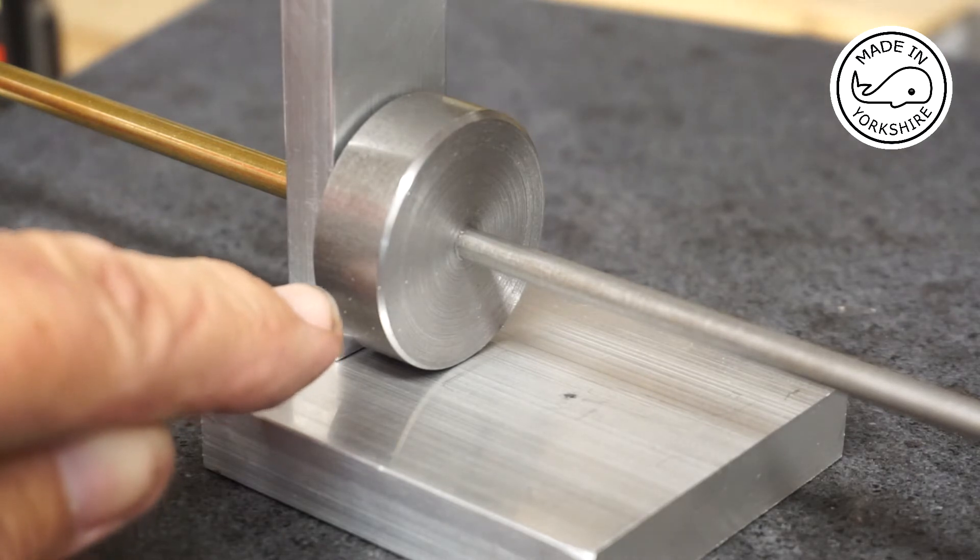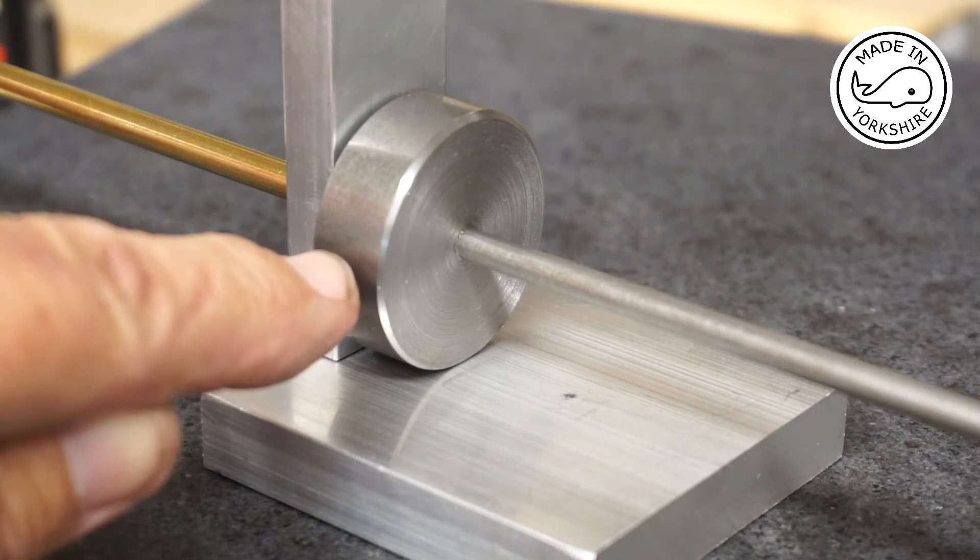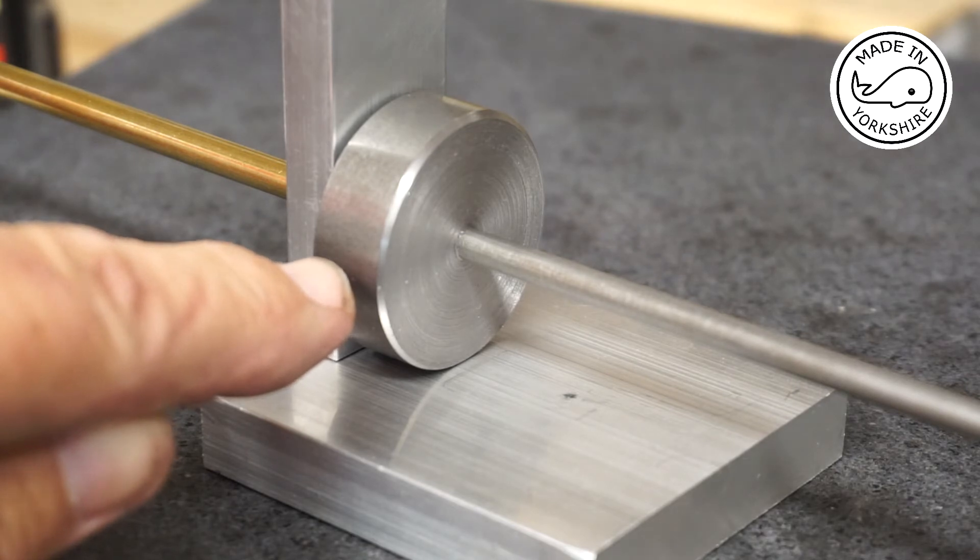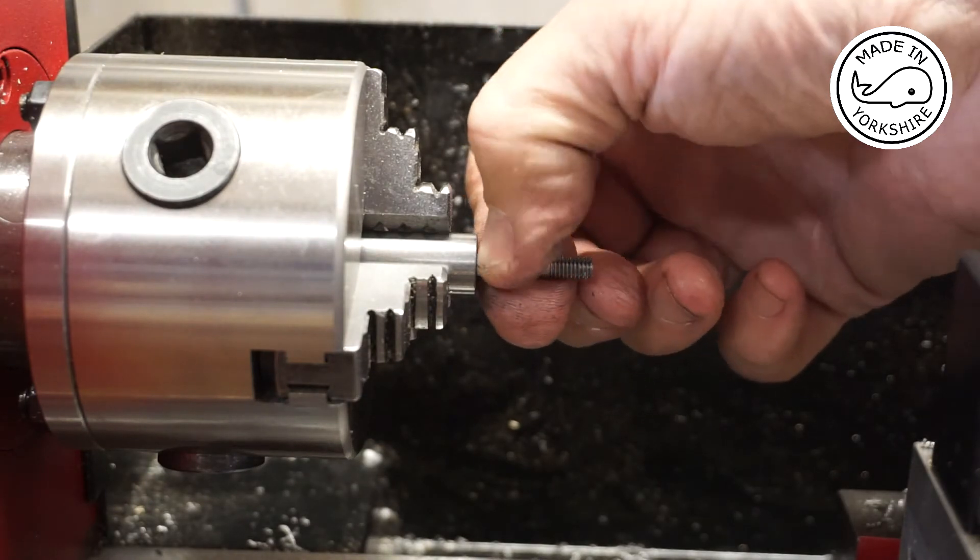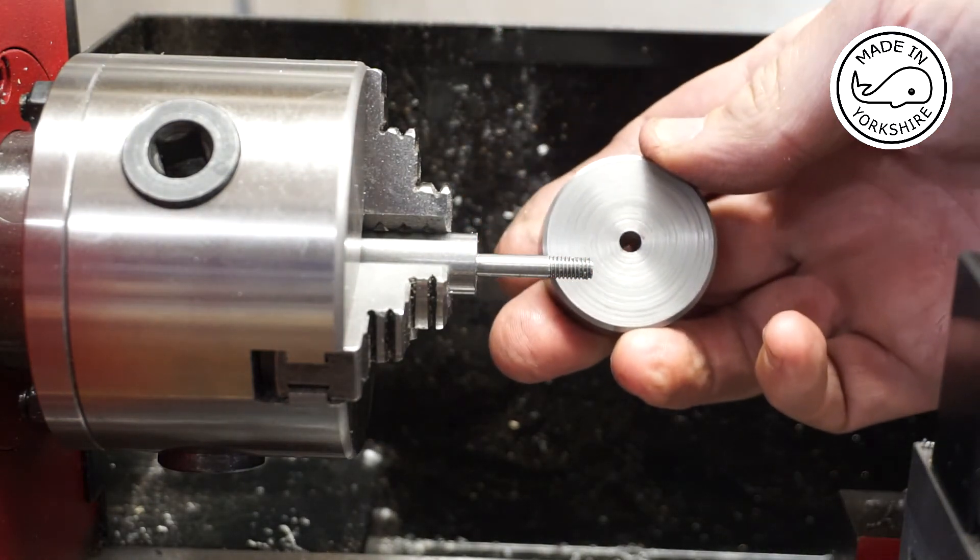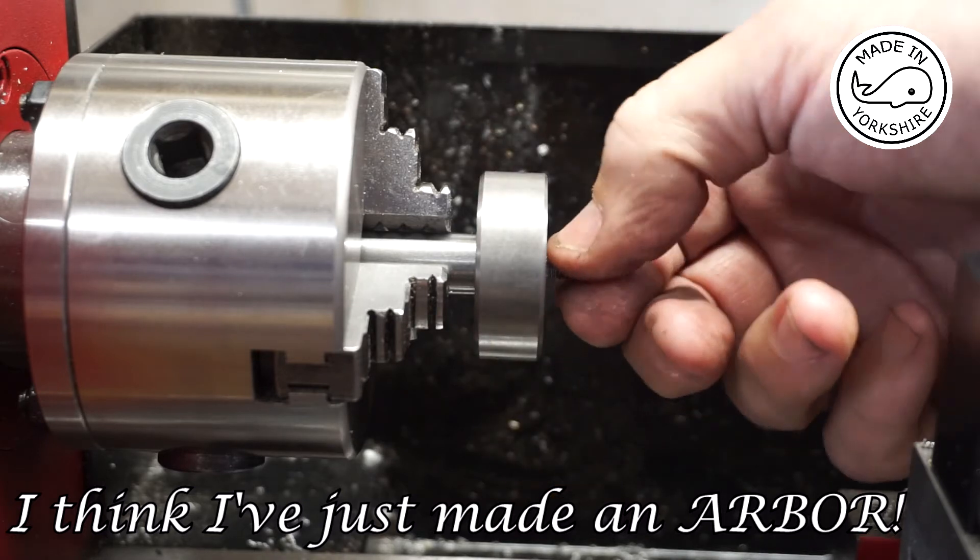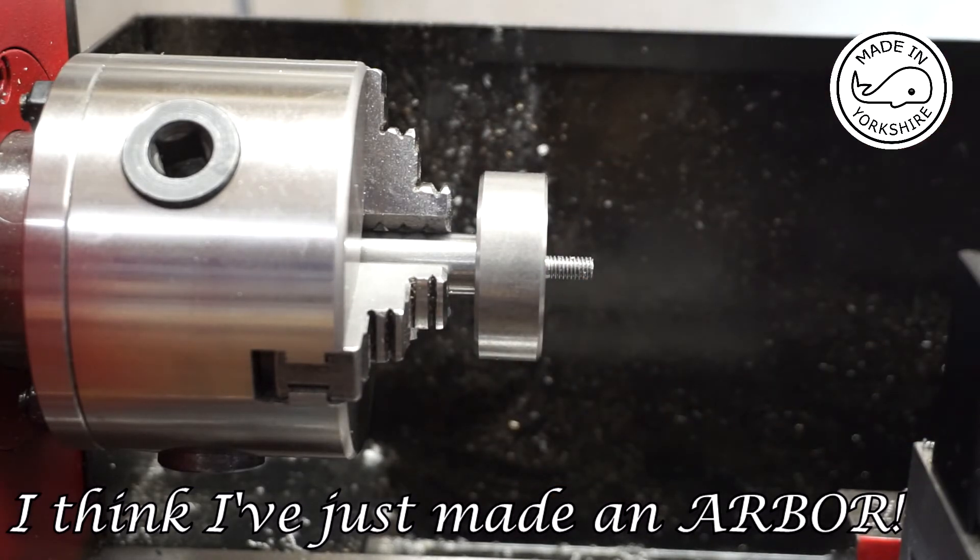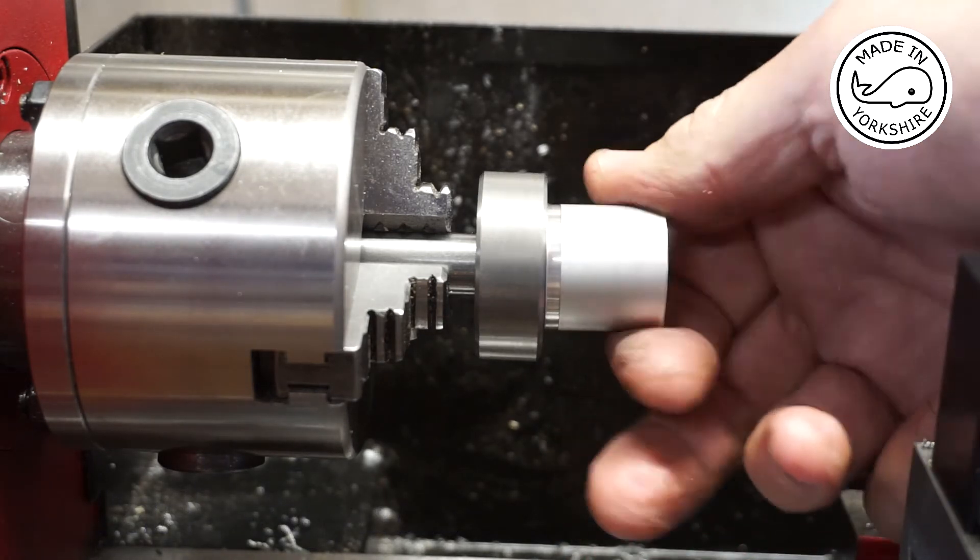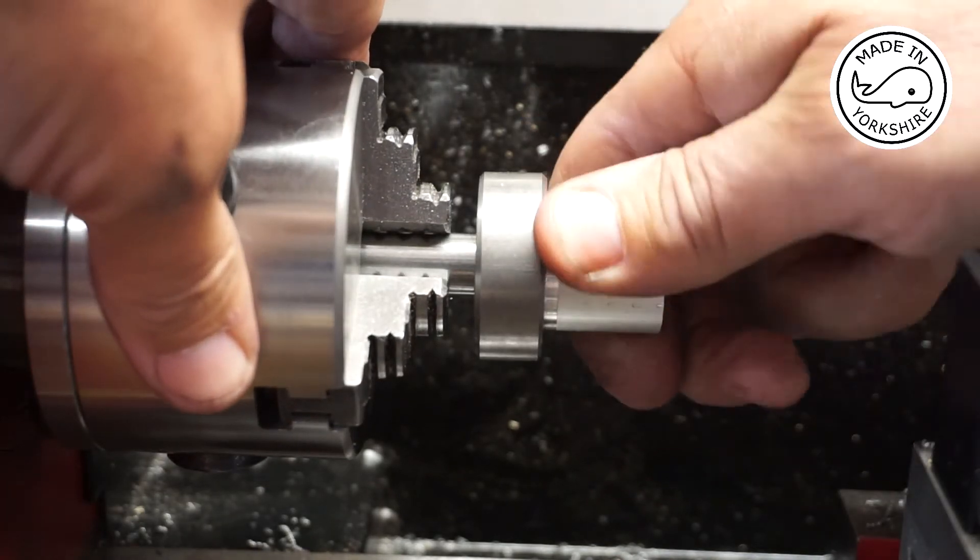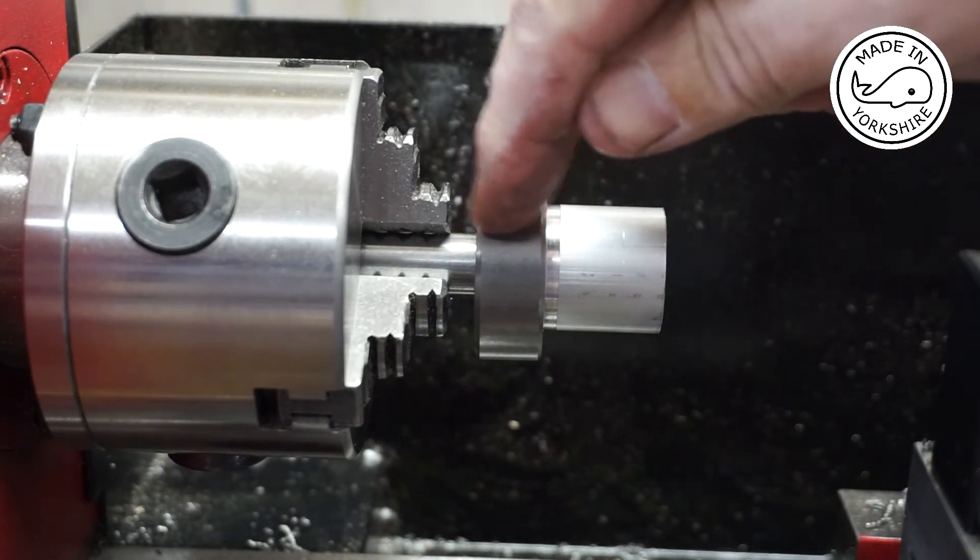The problem I've got is holding this on the lathe but I've come up with a solution which I hope will work. I've just turned down this mild steel bar to a diameter the same as the hole that's in the flywheel. I'm just going to put the flywheel on that. I've tapped this end here and I've just got a bit of aluminum that I've tapped, put that on there, tighten up and hopefully I'll be able to just skim an eighth of an inch off.